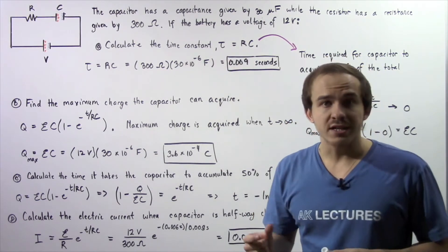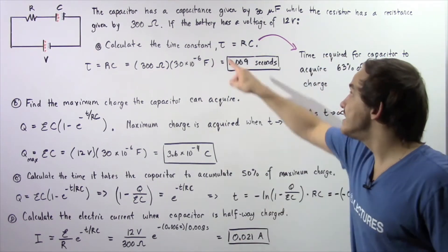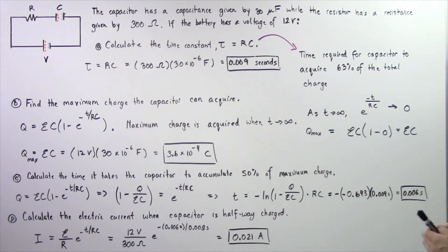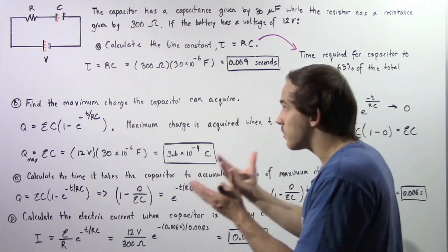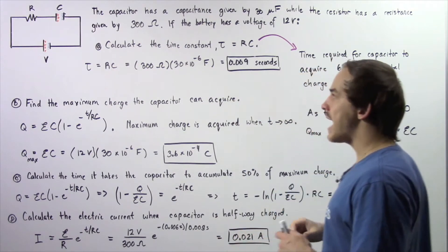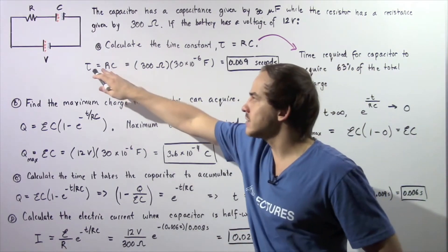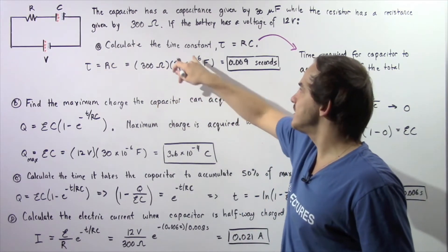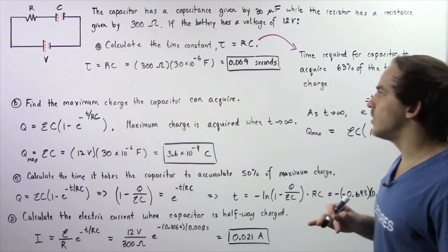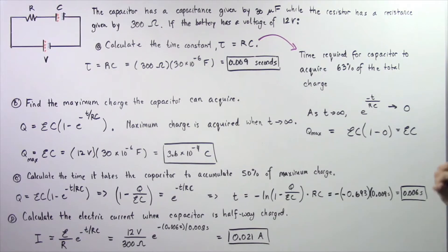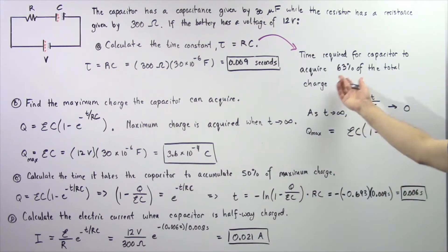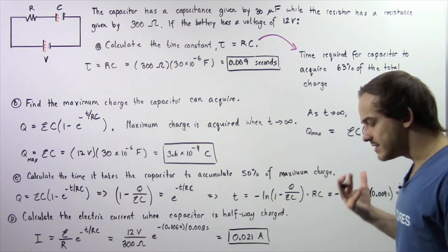Tau is equal to the product of the resistance and the capacitance. The time constant tells us the time required for our capacitor to acquire 63% of the maximum quantity of charge it can hold. So tau equals R times C, where R is 300 ohms and C is 30 times 10 to the negative 6 farads, giving us 0.009 seconds.